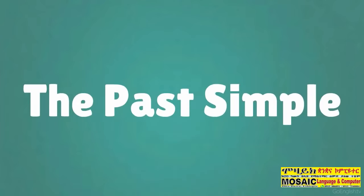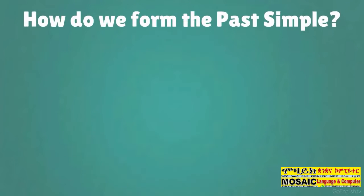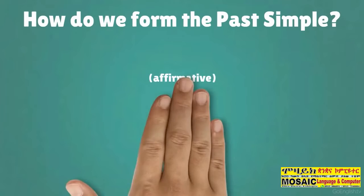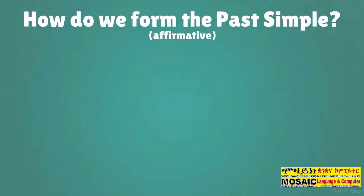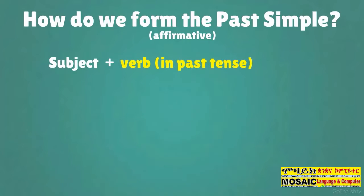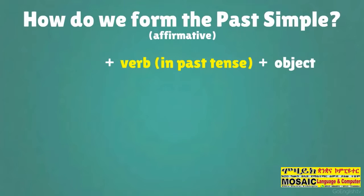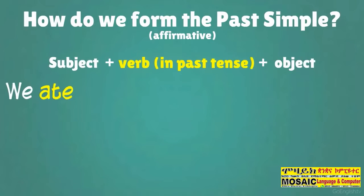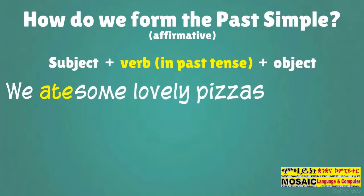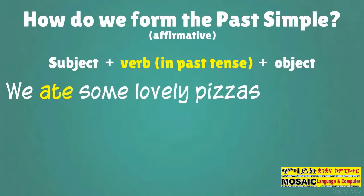The past simple. How do we form the past simple affirmative? Subject plus verb in past tense plus object. We ate some lovely pizzas last night.